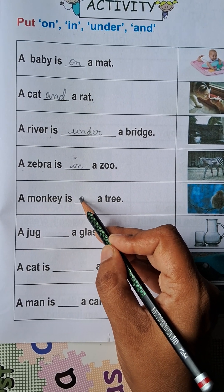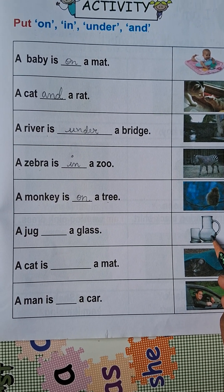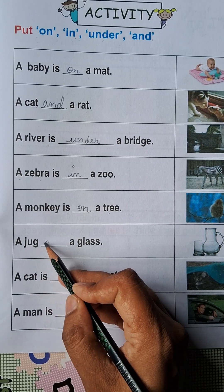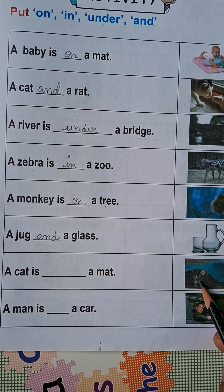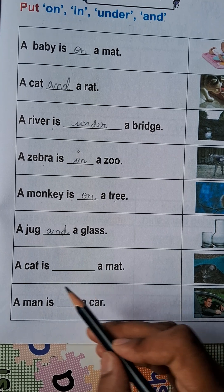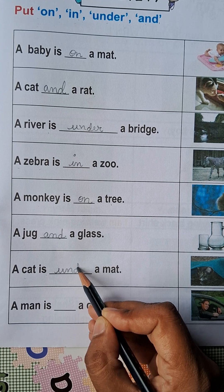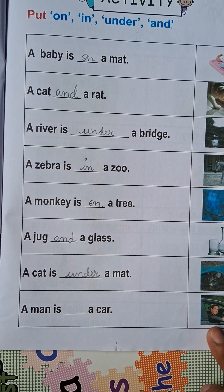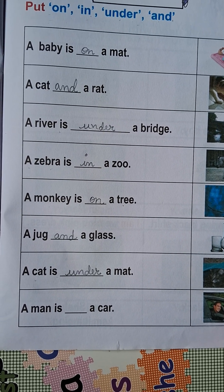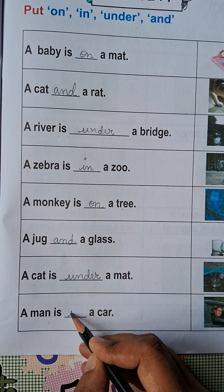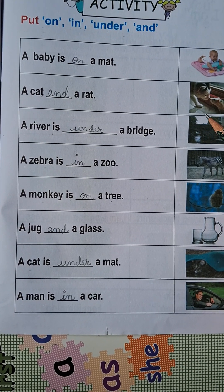A monkey is on a tree — paid par, oopar ke liye we use 'on' — a monkey is on a tree. A glass and a jug — do chizein jodne ke liye we use 'and' — a jug and a glass. Next, a cat is under a mat — niche hai so we use 'under'. And the last one, a man is in a car — under ya andar ke liye 'in' — a man is in a car.